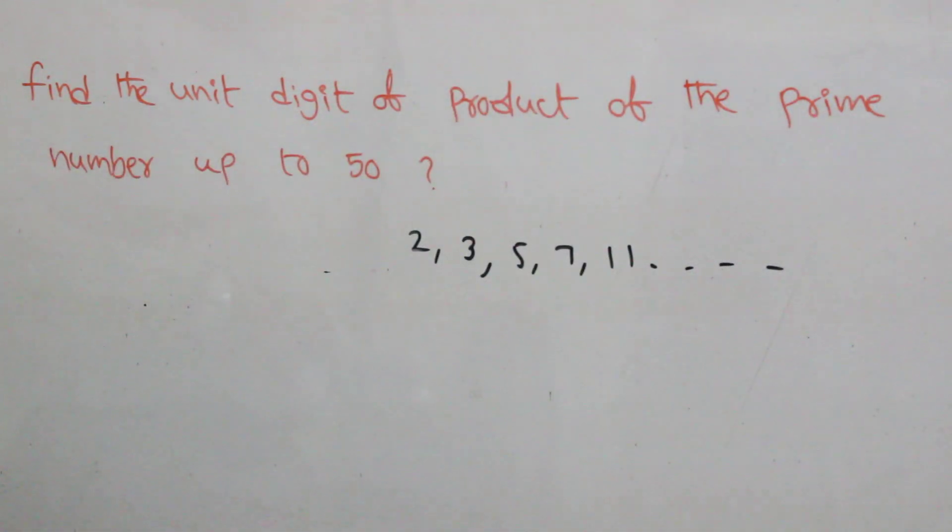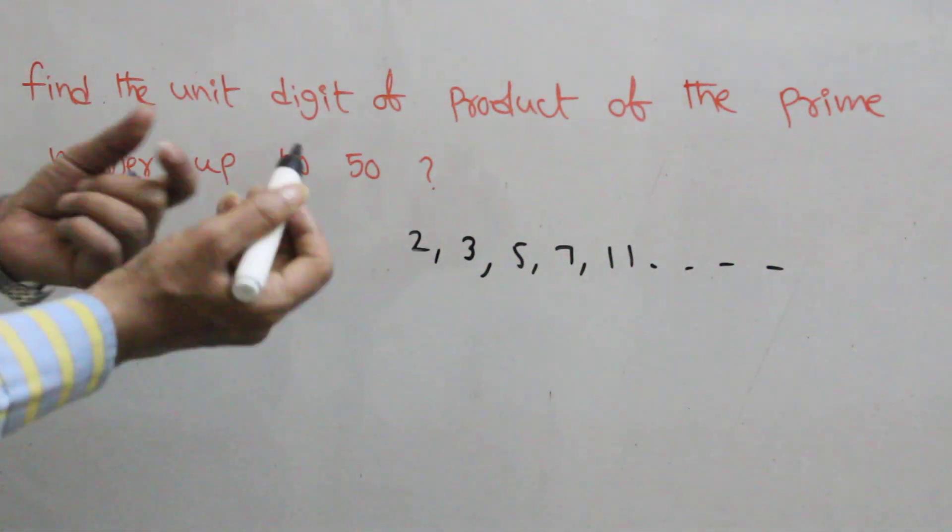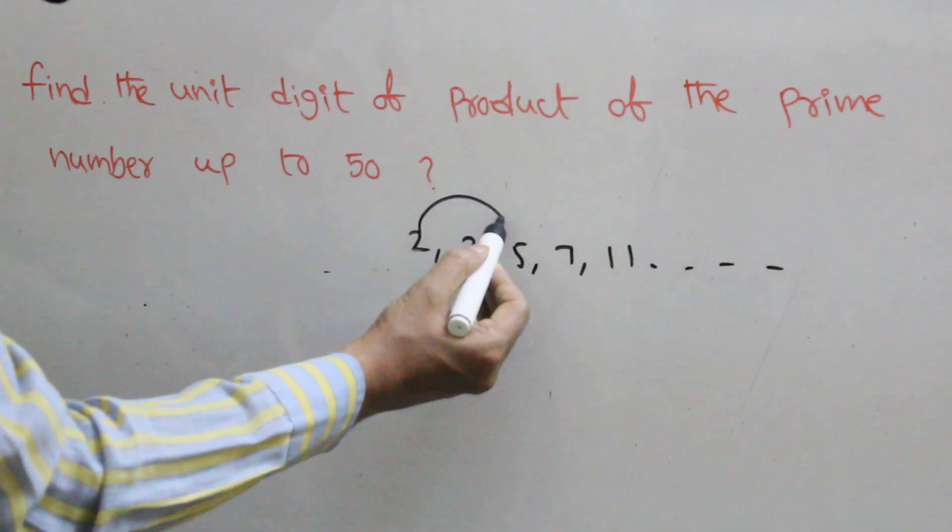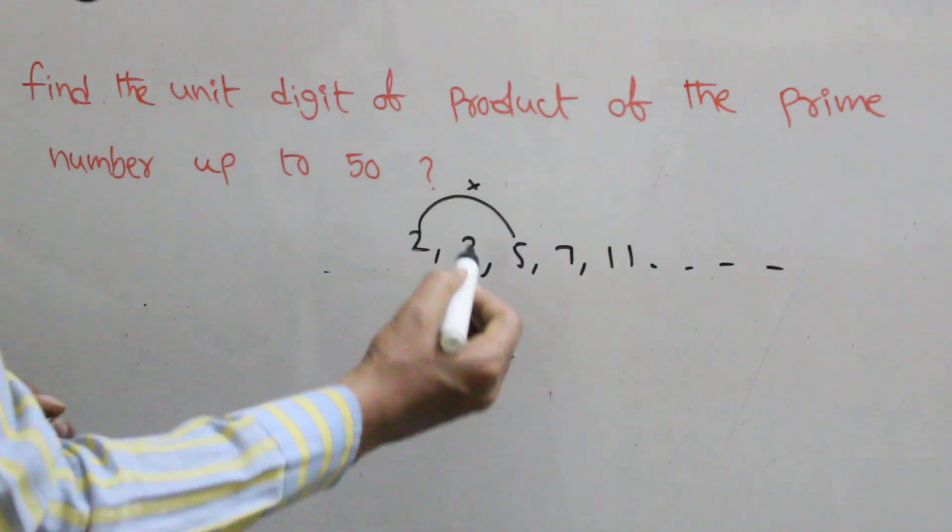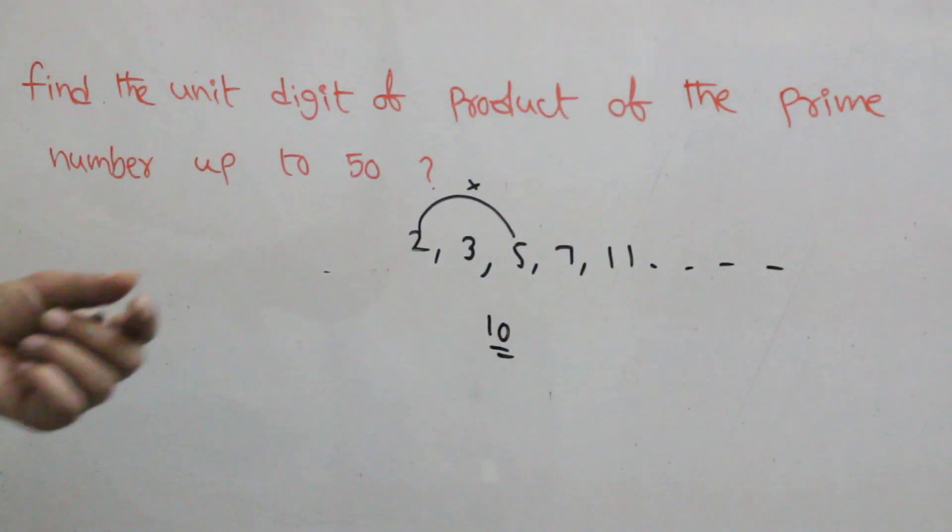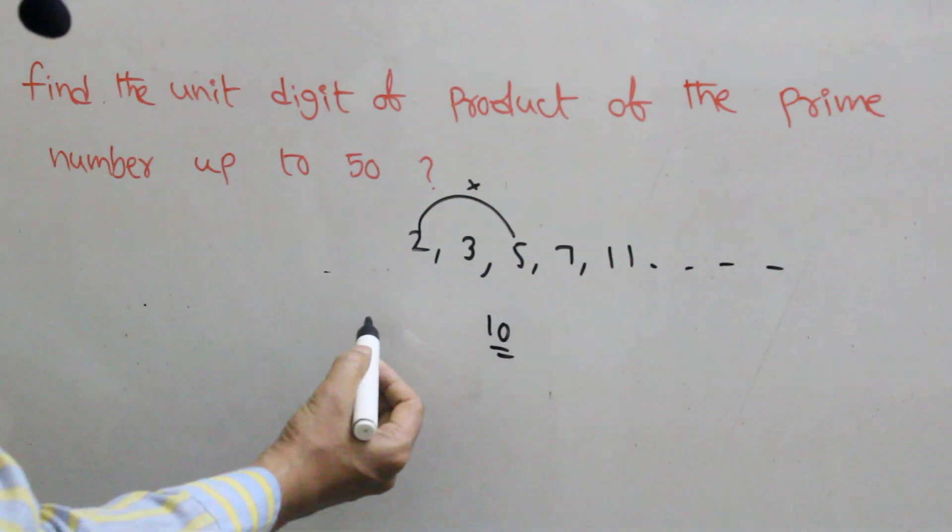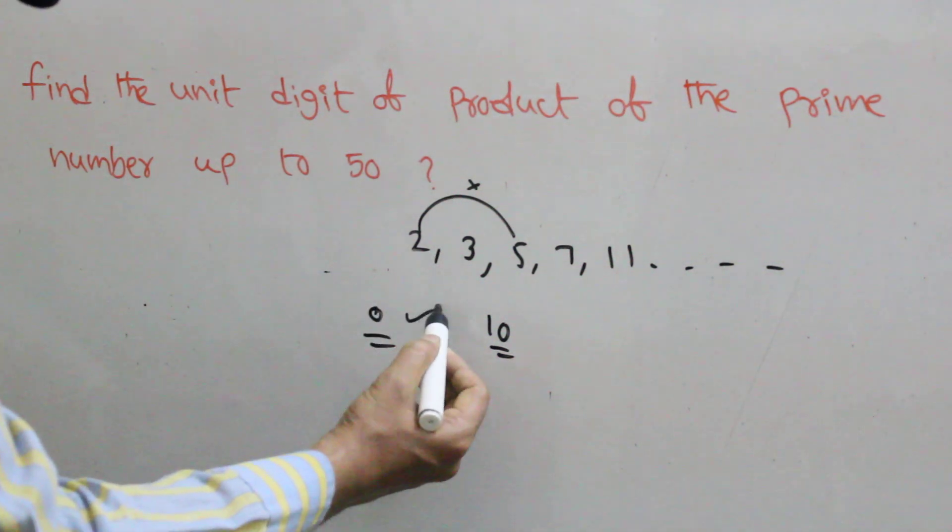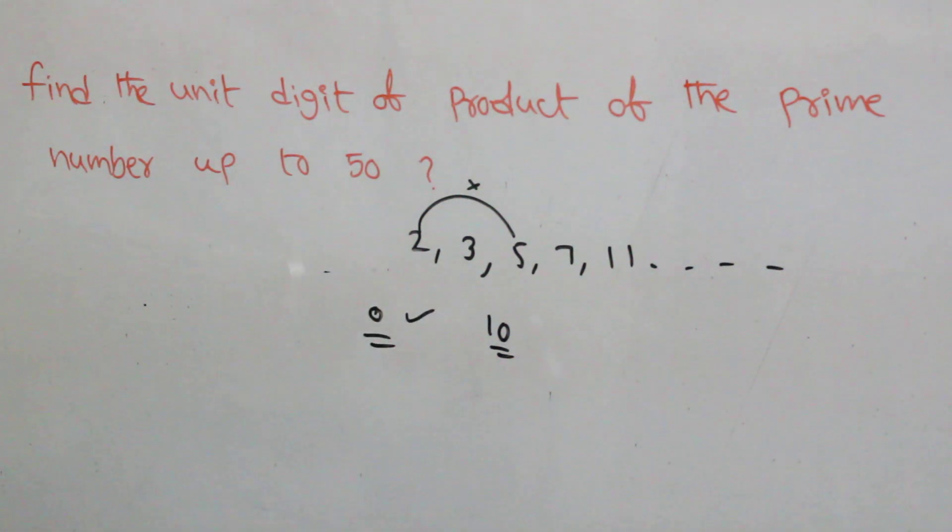But up to fifty. First of all, if you take any two numbers, first suppose for example two into five, how much? Ten. Ten into any number you product, the unit digit have zero. That's why your answer is zero.